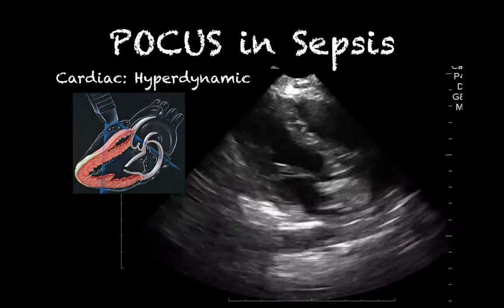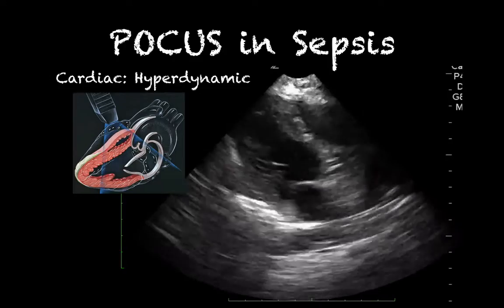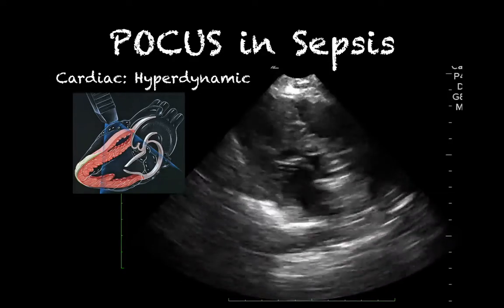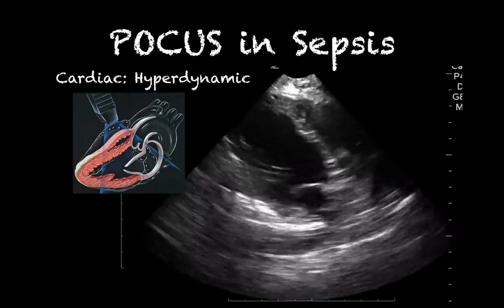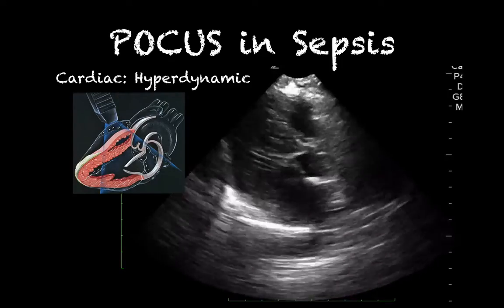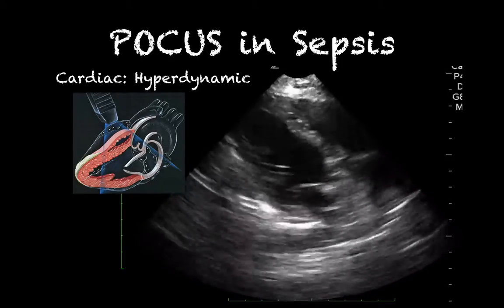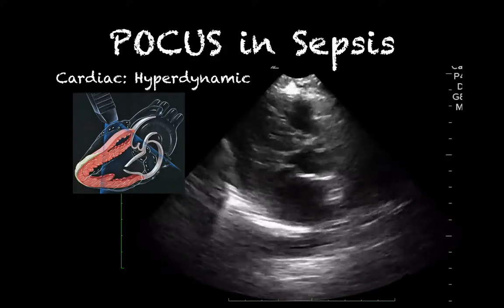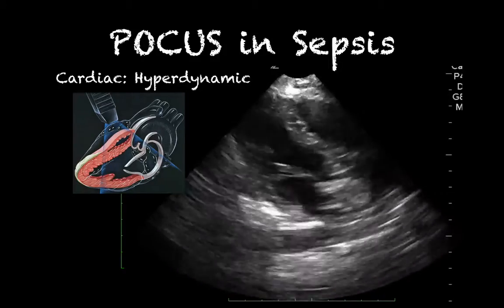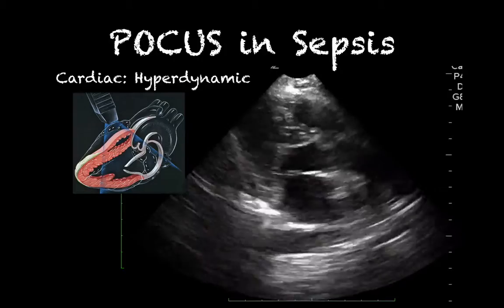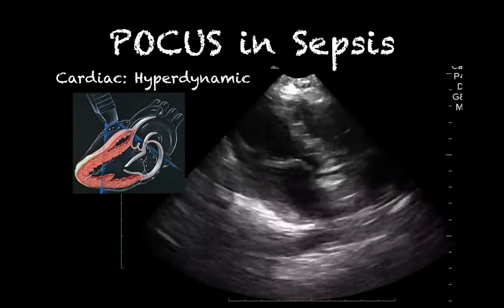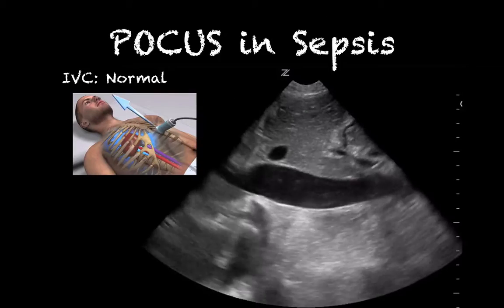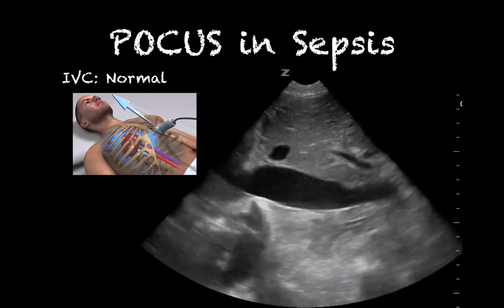Here we see a tachycardic, hyperdynamic heart. The heart is trying to compensate for the hypotension caused by vasodilation by pumping as much blood as possible. On ultrasound, we see the inner walls of the left ventricle touch during systole. Hyperdynamic LV function during initial evaluation is actually an independent predictor of sepsis.